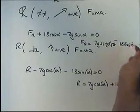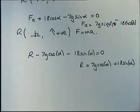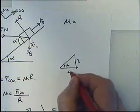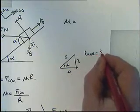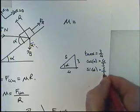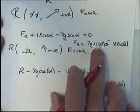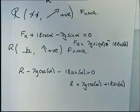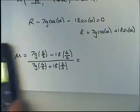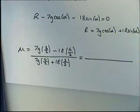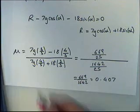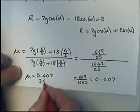We could work out alpha by doing inverse tan of 3/4, but we use the same triangle approach as the last problem. Drawing the triangle with opposite 3 and adjacent 4, Pythagoras gives hypotenuse 5. So tan α = 3/4, cos α = 4/5, and sin α = 3/5. Substitute those values carefully into the equations for friction and R, then divide friction by R to get μ. Remember g is 9.8 in maths, not 9.81 as in physics. I make that 0.407 to 3 significant figures, so μ equals 0.407 to 3 significant figures.